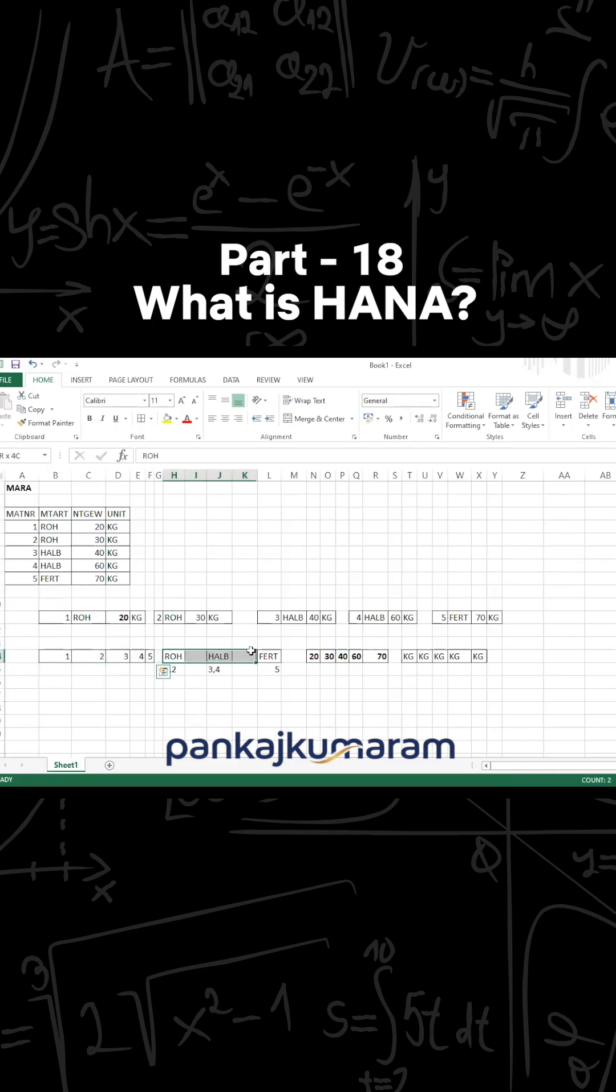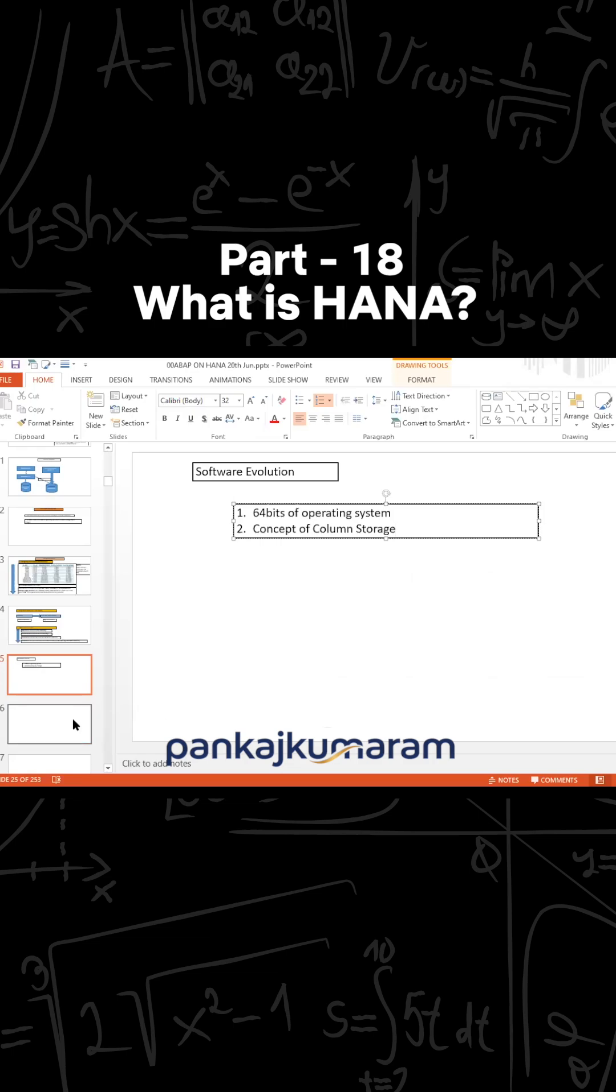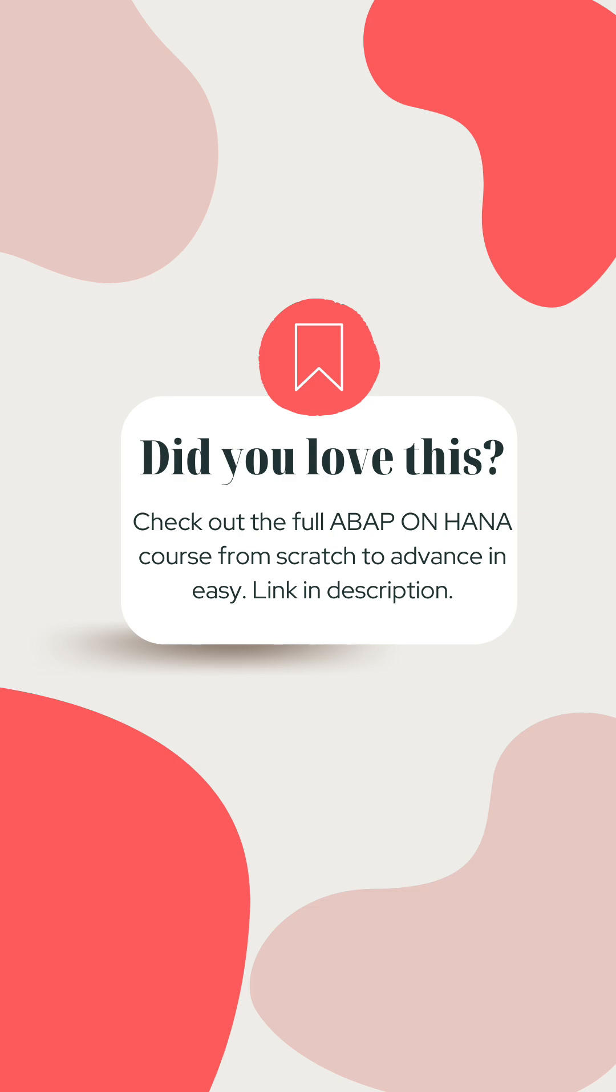Why? Because here you can see that this data is going to get stored in the column storage format, so it itself by default creates the secondary index. That's why it does not have to create additional secondary index. So if you have column storage, you don't have to create that additional secondary index.